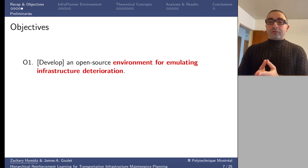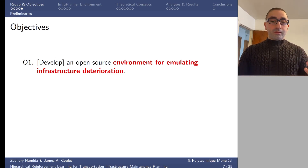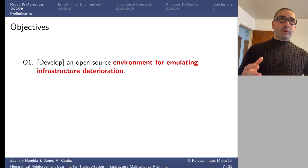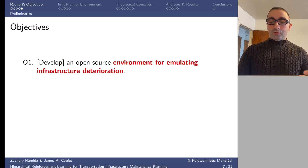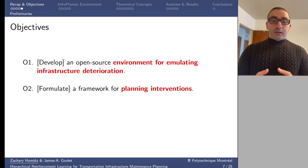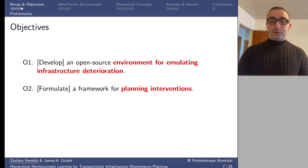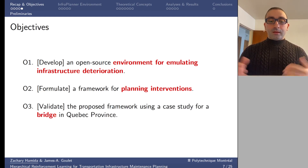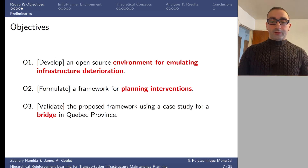We want to use this deterioration information for decision making. The first step is to develop an environment for emulating the deterioration process, carrying the same theoretical foundations as the deterioration model. We'll use this environment to explore and test maintenance policies. Step two is to formulate a framework for planning maintenance on bridges using that environment. We've applied this framework to perform deterioration and intervention analysis on a bridge within the Quebec province.